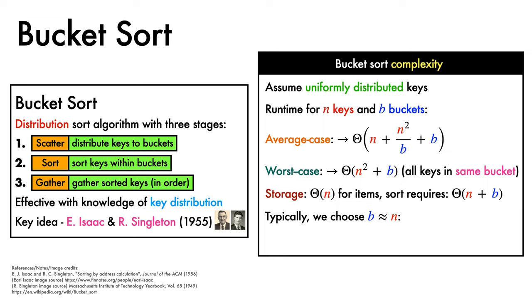In typical usage, we choose the number of buckets to approximately match the number of keys. This has the appealing benefit of giving us average case complexity that is linear in the number of keys.